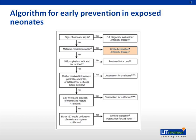Consultation with obstetric providers to assess whether chorioamnionitis was suspected is important to determine neonatal management. Well-appearing infants whose mothers received adequate intrapartum GBS prophylaxis — more than four hours of penicillin, ampicillin, or cefazolin before delivery — should be observed for more than 48 hours with no routine diagnostic testing. For well-appearing infants born to mothers who had an indication for GBS prophylaxis but received no or inadequate prophylaxis: if the infant is at least 37 weeks gestational age and membrane rupture was less than 18 hours, observe for 48 hours without testing; if less than 37 weeks or membrane rupture was more than 18 hours, perform a limited evaluation and observe for more than 48 hours.